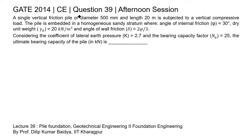This is question 39 of the civil engineering paper of GATE 2014 afternoon session. A single vertical friction pile of diameter 500 millimeter and length 20 meter is subjected to a vertical compressive load. The pile is embedded in a homogeneous sandy stratum where angle of internal friction φ is 30 degrees, dry unit weight γd is 20 kN/m³, angle of wall friction δ is 2φ/3, coefficient of lateral earth pressure K is 2.7, and bearing capacity factor Nq is 25. Find the ultimate bearing capacity of the pile.